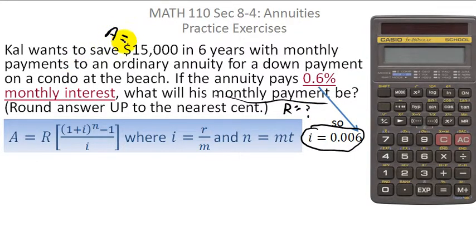The first thing they tell us is that Cal wants to have $15,000 in six years. That's the future or accumulated value of that annuity. So capital A is 15,000. We're looking for capital R, and we've already decided that we know what little i is.